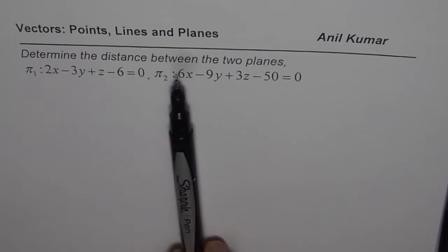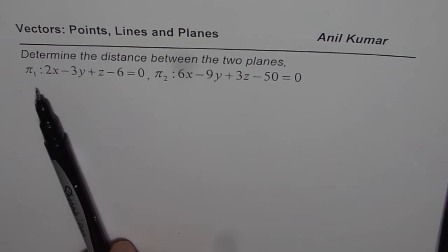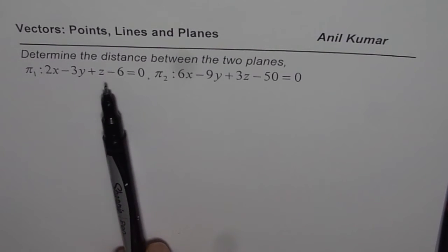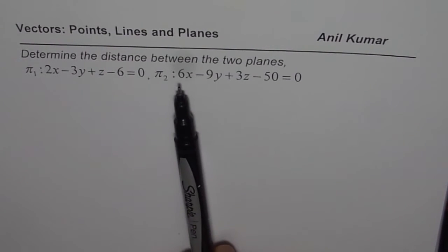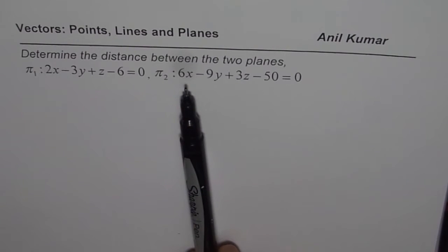Determine the distance between two planes. The plane π₁ is 2x - 3y + z - 6 = 0 and this is 6x - 9y + 3z - 50 = 0.